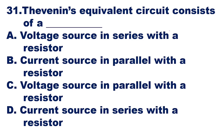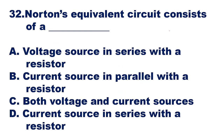Question 31: A Thevenin's equivalent circuit consists of — a voltage source in series with a resistor, a current source in parallel with a resistor, voltage source in parallel, or current source in series. Option A is the right answer: Thevenin's equivalent circuit consists of a voltage source in series with a resistor.